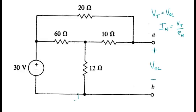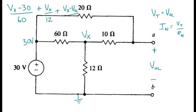I think nodal analysis is probably the best bet for that circuit. And for our first equation, let me jot that down up here. Vx minus 30 over 60 plus Vx over 12 plus Vx minus Voc over 10 equals 0.